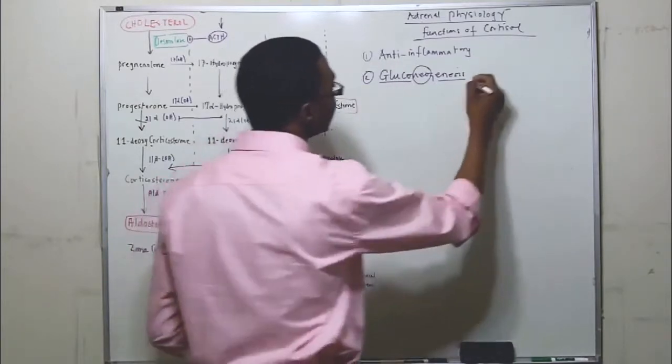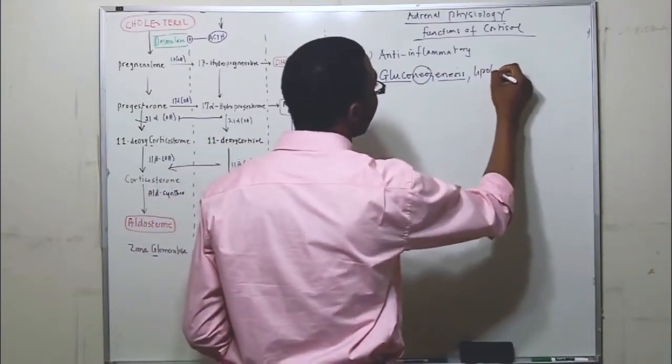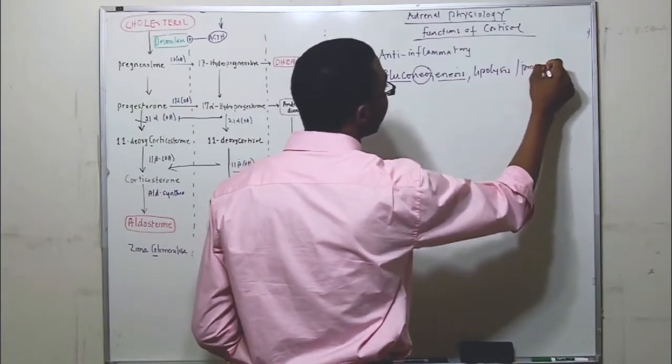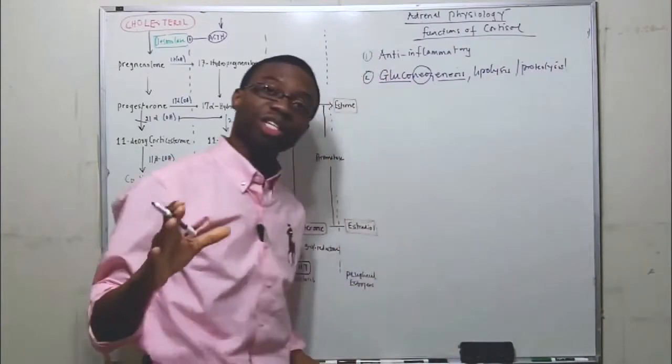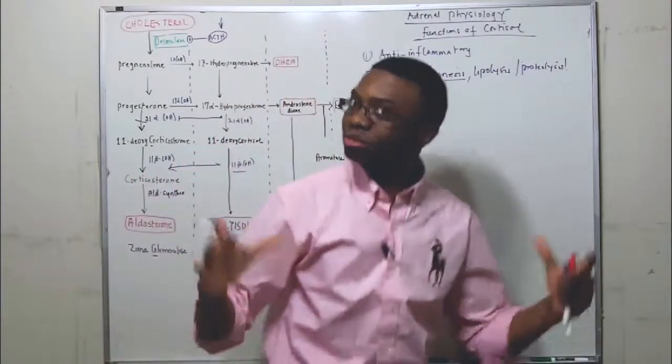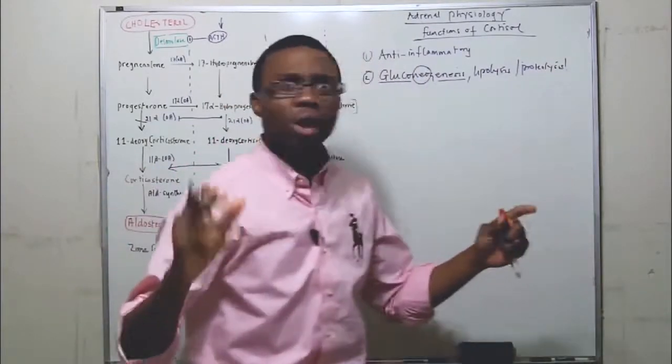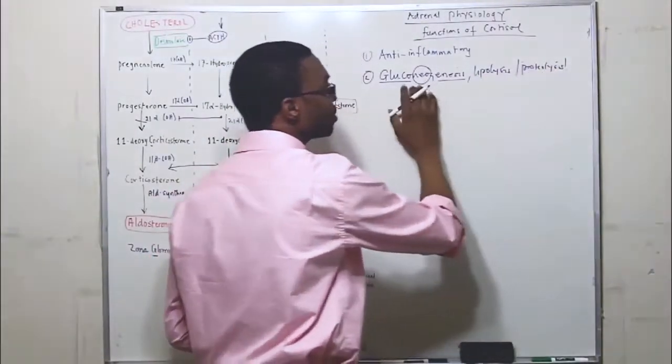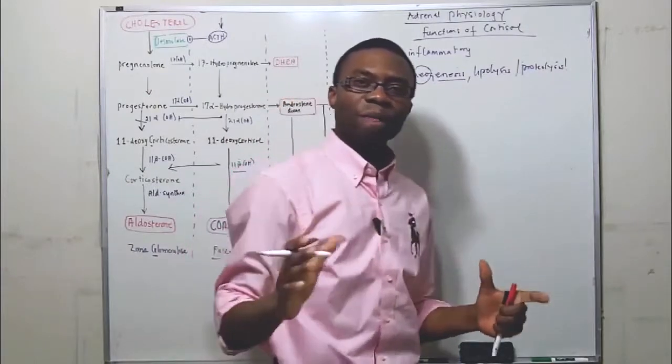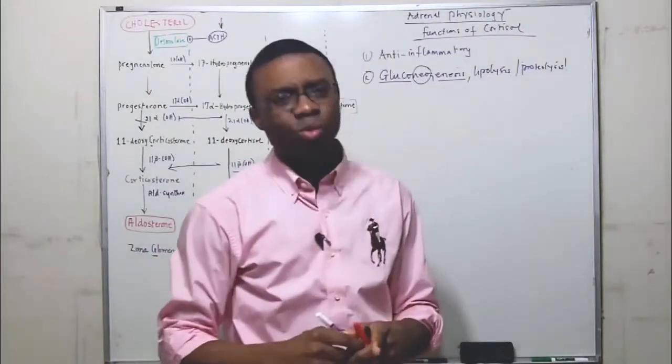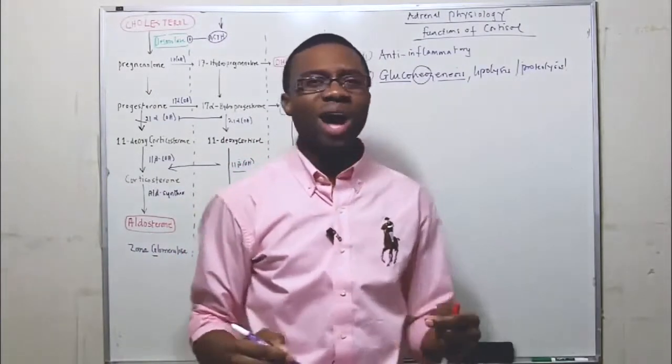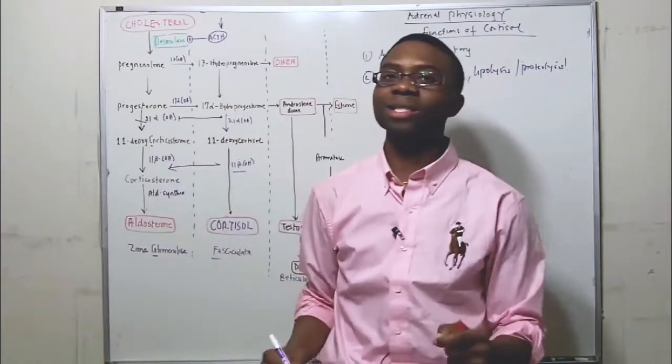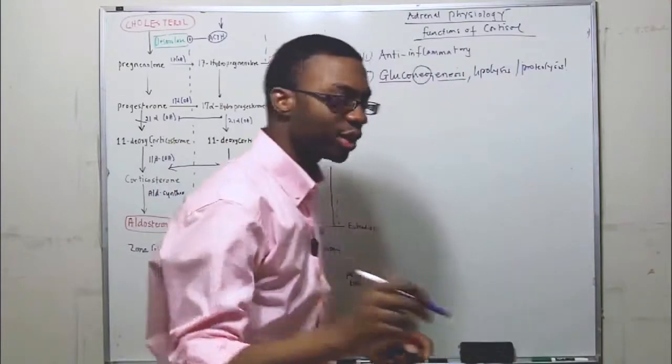The second function is it causes lipolysis and proteolysis. This is going to be key when we talk about Cushing's, because we're going to talk about the clinical symptoms that they look like. It breaks down your fat and your protein and increases the amount of glucose. Why do we need that? Why does cortisol need to do all this? We will talk about that when we talk about the stress response the body needs.